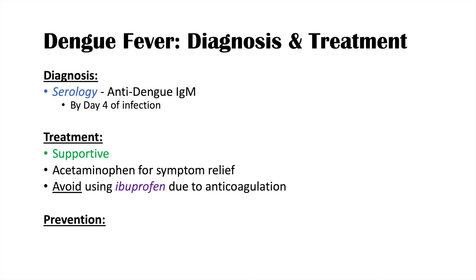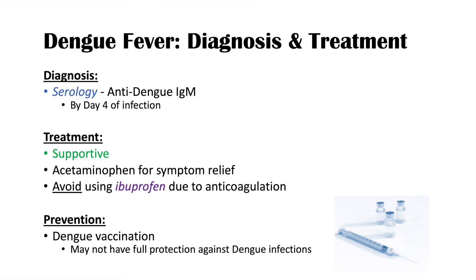We can also try to prevent dengue fever with a dengue vaccination. Unfortunately, the vaccine may not provide full protection, but it does reduce the severity of symptoms and length of infection. To summarize: diagnosis is by anti-dengue IgM antibody, usually detectable by day four; treatment is supportive with acetaminophen; avoid Advil due to bleeding risk; and vaccination can help prevent infection.